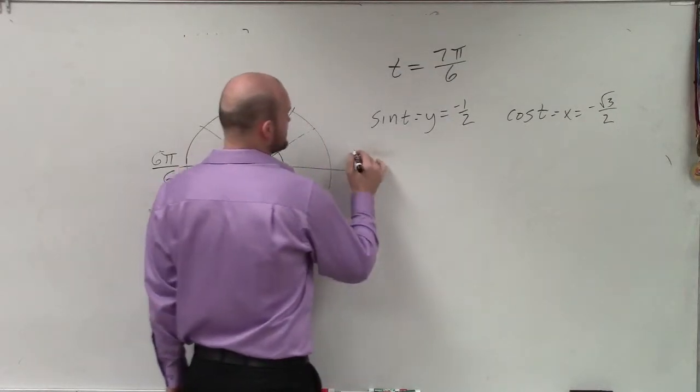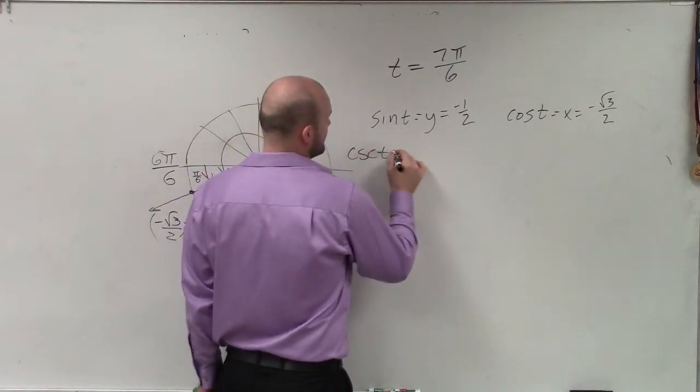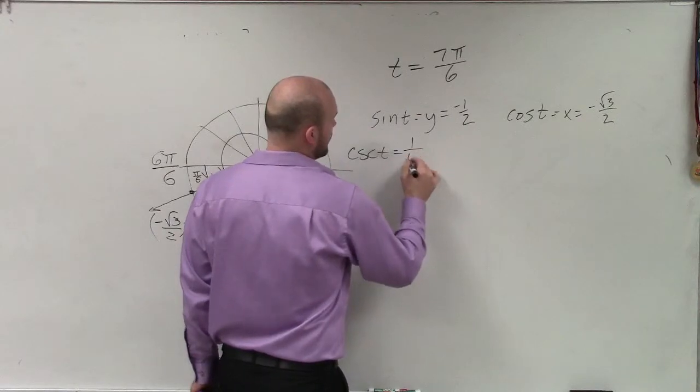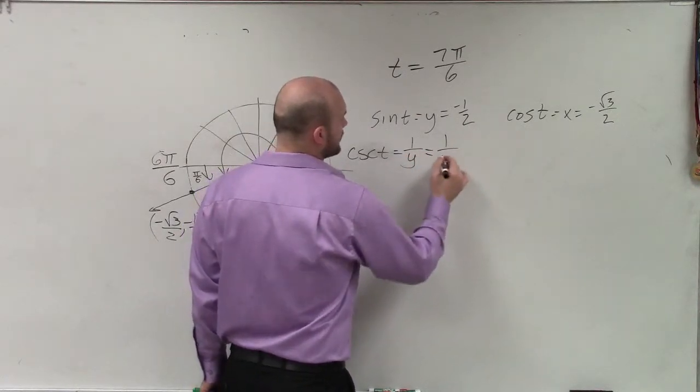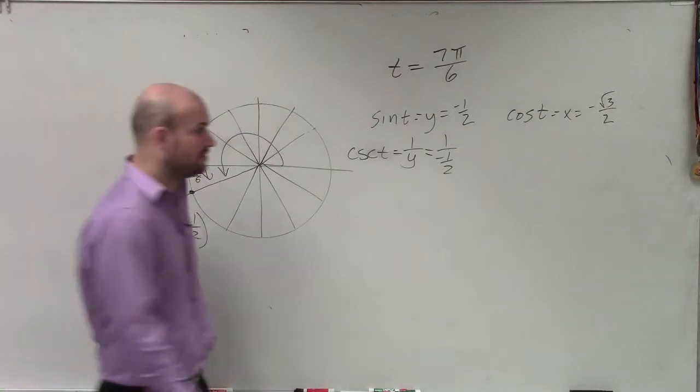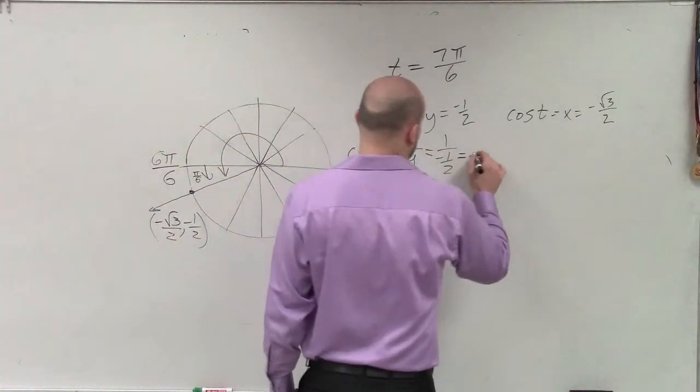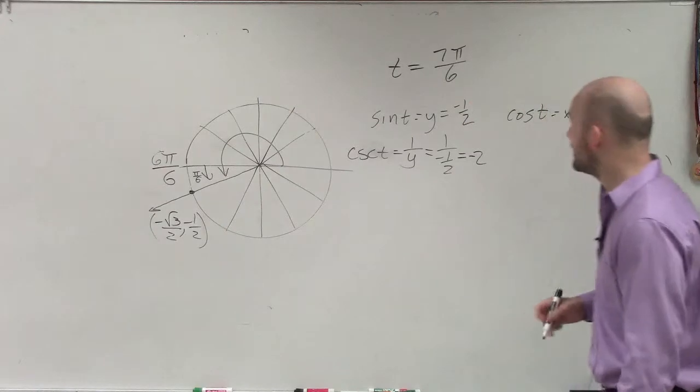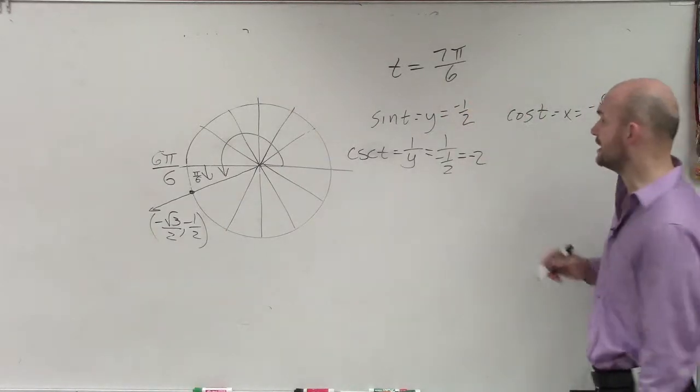So now let's get into the fun ones. Actually, let's do the reciprocal properties. So therefore, I have cosecant of t, which is equal to 1 over y. So I have 1 over negative 1 half. Again, just multiply by the reciprocal. But to keep this video short, I'm just going to do it in my head. But if you multiply by the reciprocal, you get negative 2.